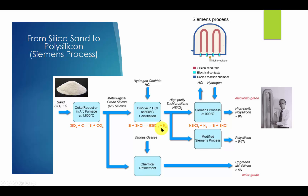Step 3: The above process also creates chlorides of unwanted elements such as iron, aluminum, boron, and phosphorus. The trichlorosilane has a low boiling point of 31.8 degrees C, and distillation is used to purify it from the impurity halides.